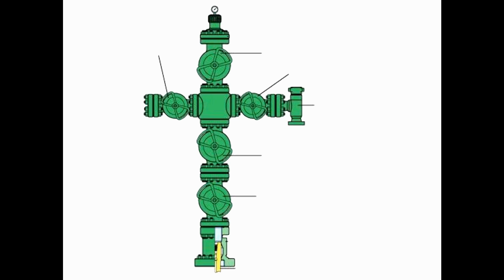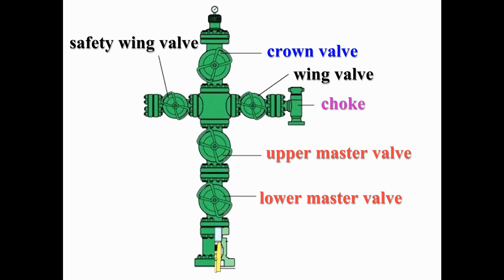In this illustration, the main valves that control the well's pressure are labeled. They are dual master valves, the crown valve, the wing valve, the choke, and the safety valve. Let me explain the function of each.